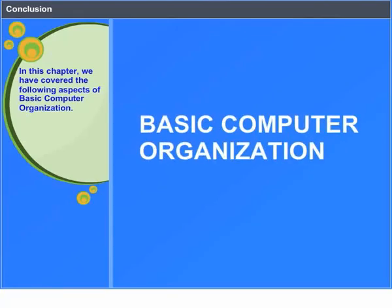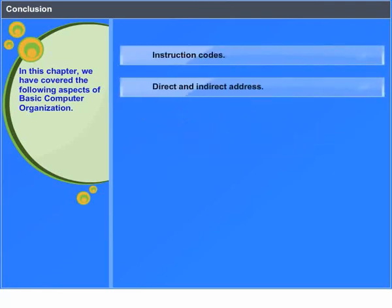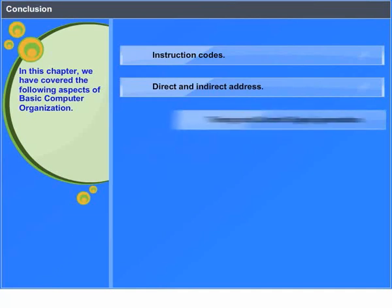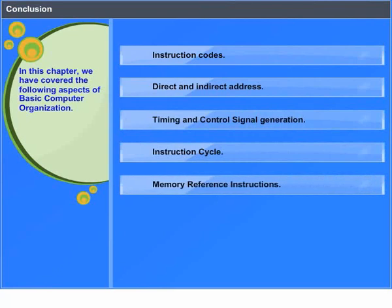In conclusion, this chapter covered the following aspects of basic computer organization: instruction codes, direct and indirect address, timing and control signal generation, instruction cycle, memory reference instructions, and input-output instructions.